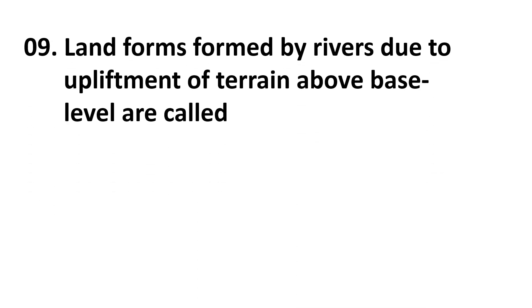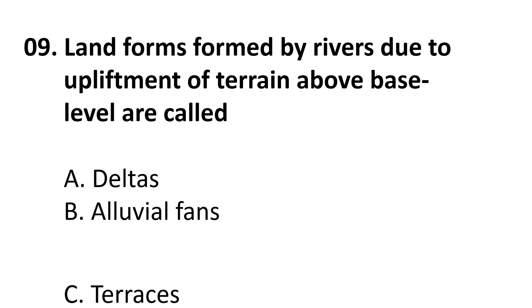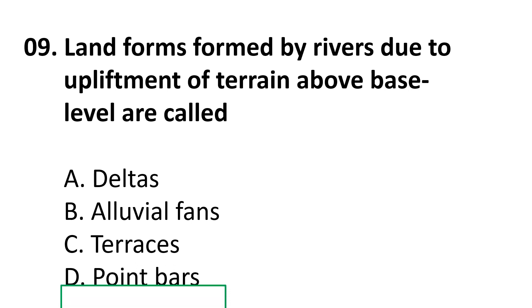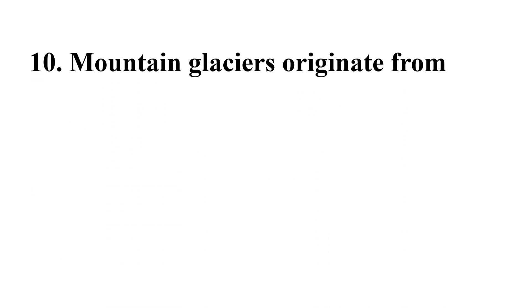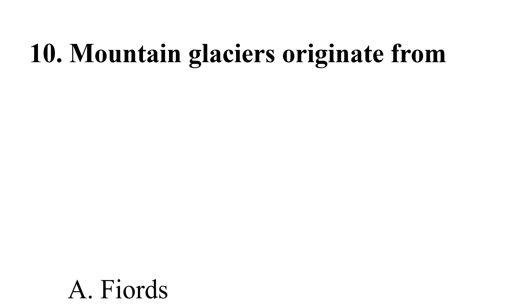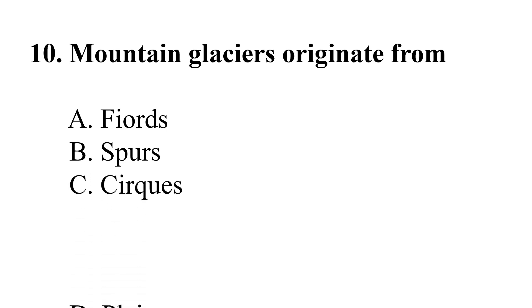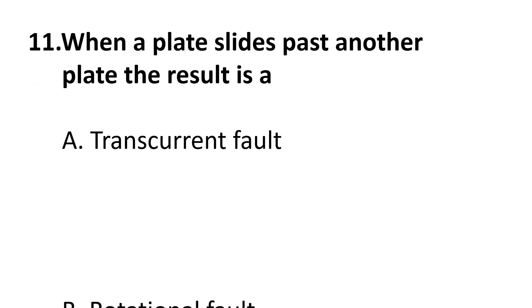Coming to the ninth question: landforms formed by rivers due to upliftment of terrain above base level — choices are: A) delta, B) alluvial fans, C) terraces, D) point bars. The correct answer is B: alluvial fans. Coming to the tenth question: mountain glaciers originate from — choices are: A) fjords, B) spurs, C) cirques, D) plains.